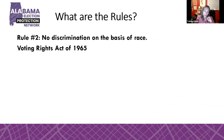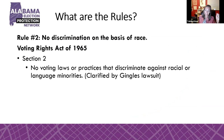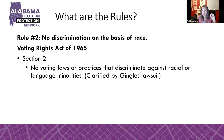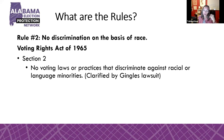Rule number two: no discrimination on the basis of race. This comes from the Voting Rights Act of 1965. The most important part of the Voting Rights Act, most people will say, is Section 2. Section 2 says that no voting laws or practices can discriminate against racial or language minorities. In the early 80s, Congress clarified that what they mean by discrimination is that it can't have the effect — you can't have any voting practice that has the effect of disenfranchising minorities. Even if you didn't mean for it to have that effect, it doesn't matter. If that's the effect, then it's discrimination and it's banned under Section 2 of the Voting Rights Act.